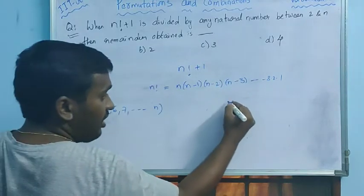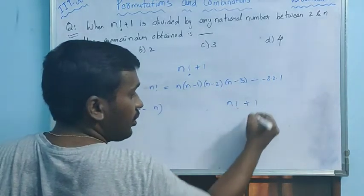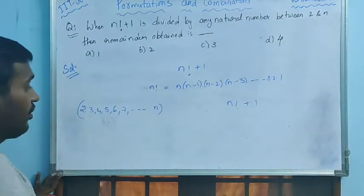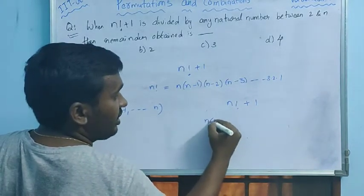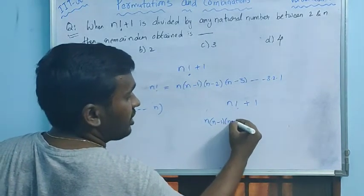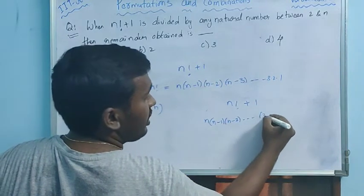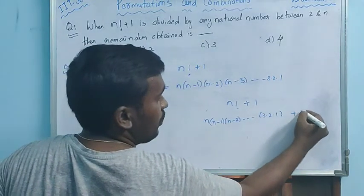See, you have n factorial plus 1. With this one, for example, here in this n factorial, what you can write? n into n minus 1 into n minus 2 and so on, 3 into 2 into 1 plus 1.